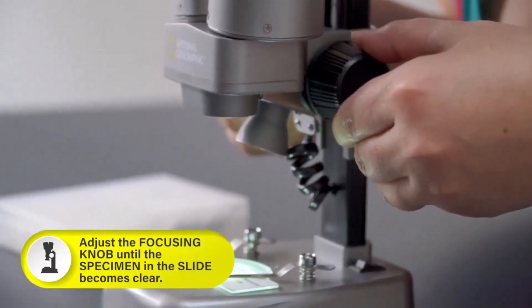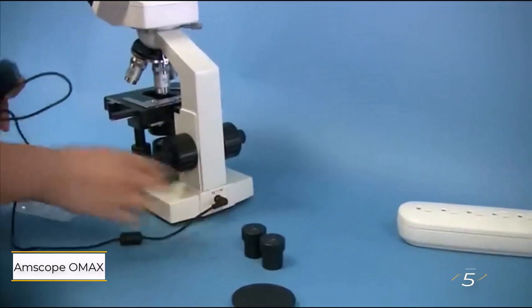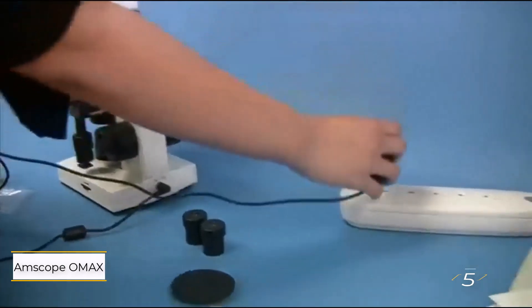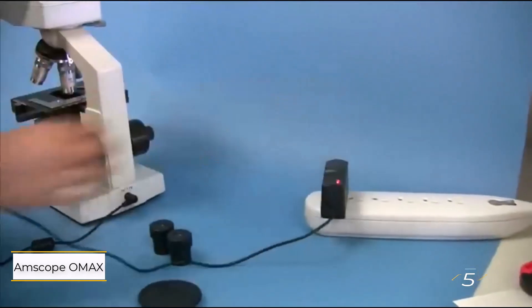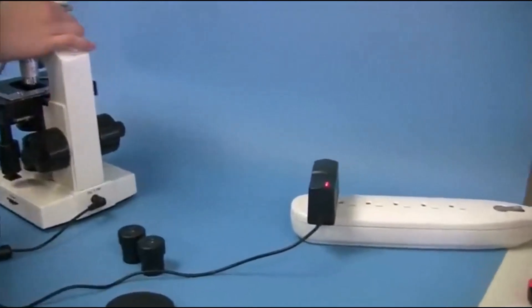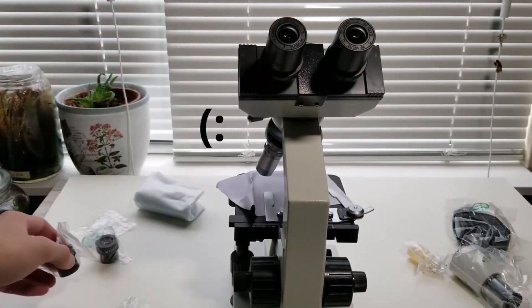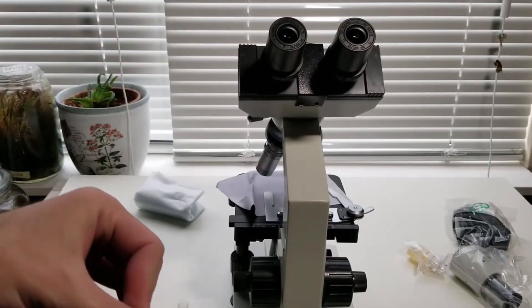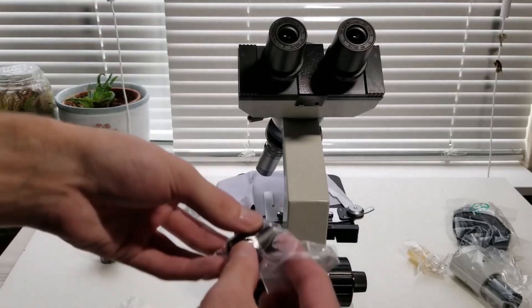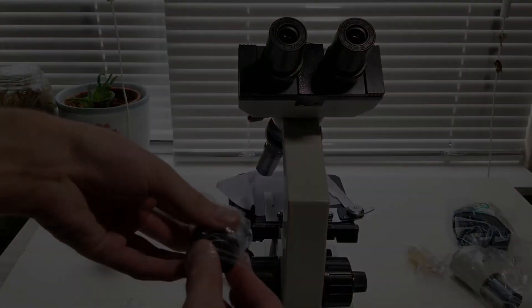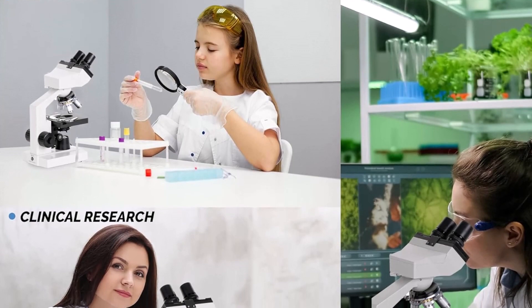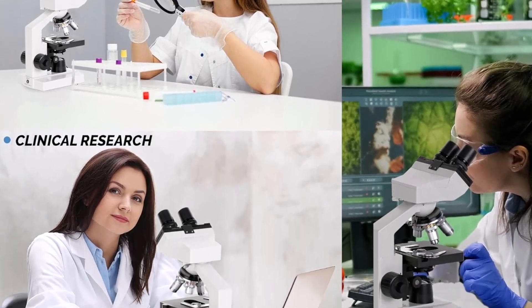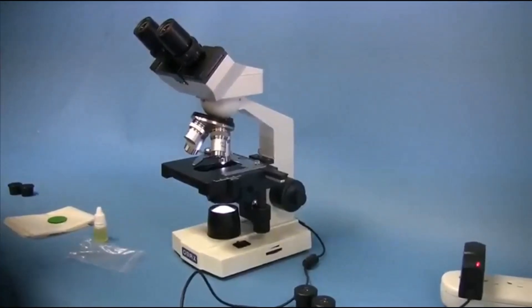Number five: Amscope OMAX 40X to 2000X Lab LED Binocular Microscope. Are you or your kids eager to explore the microscopic world? Amscope's OMAX 40X to 2000X Lab LED Binocular Microscope is a fantastic choice. With up to 2000X magnification, you can delve into the intricate structures of fungi, protozoa, cell walls, membranes, organelles, and even view cell nuclei.